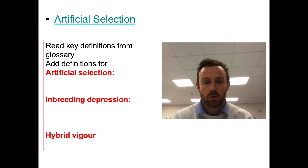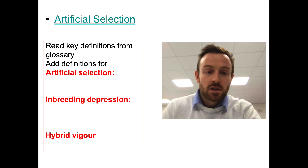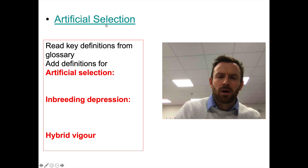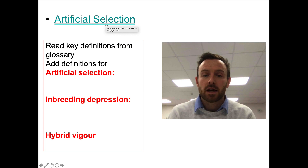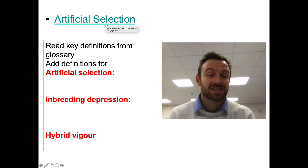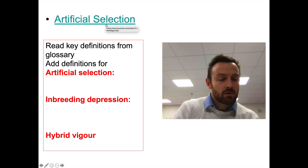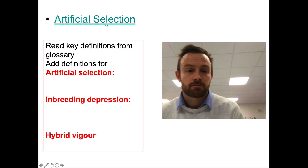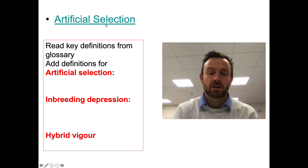Today's lesson is artificial selection. The first thing you should do is watch this video link about artificial selection — it's a fascinating National Geographic video about super cows. I'll put the link in the description and it's also in the PowerPoint on the VLE. Once you've done that, come back and write down these three definitions: artificial selection, inbreeding depression, and hybrid vigor. Pause the video, watch that video, and come back.